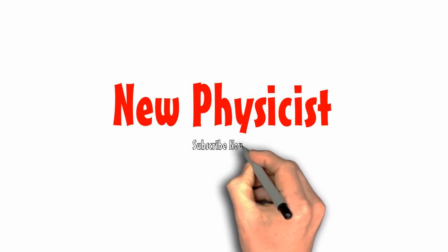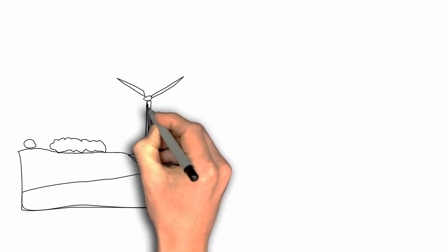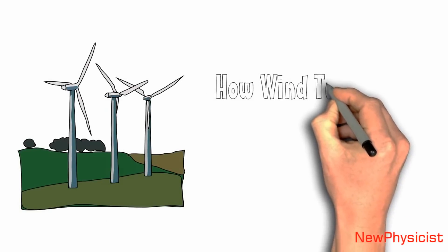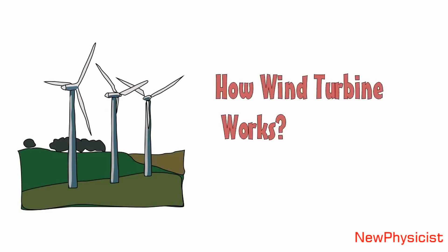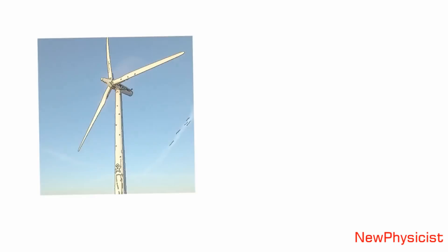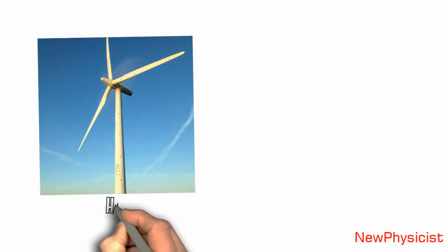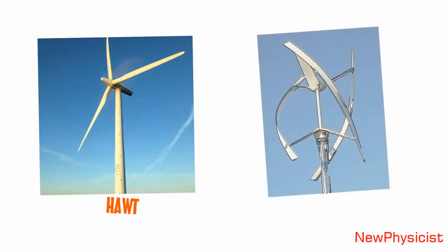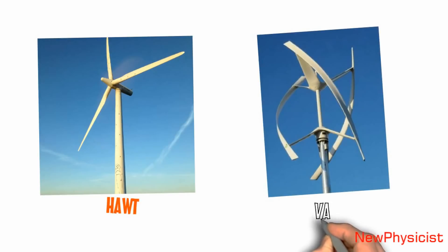Hey, welcome back to New Physicist. How Wind Turbine Works. There are different types of wind turbines, but the most popular and widely used one is the horizontal axis wind turbine. How does a horizontal axis wind turbine work? Wind power is the fastest growing renewable energy source in the world. That's why I love to talk about wind turbines and make projects.